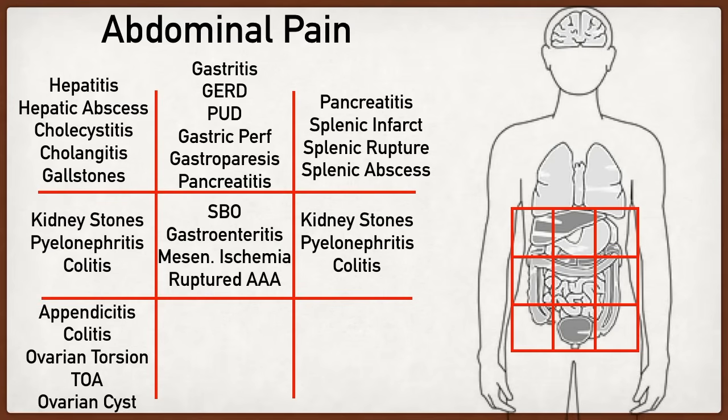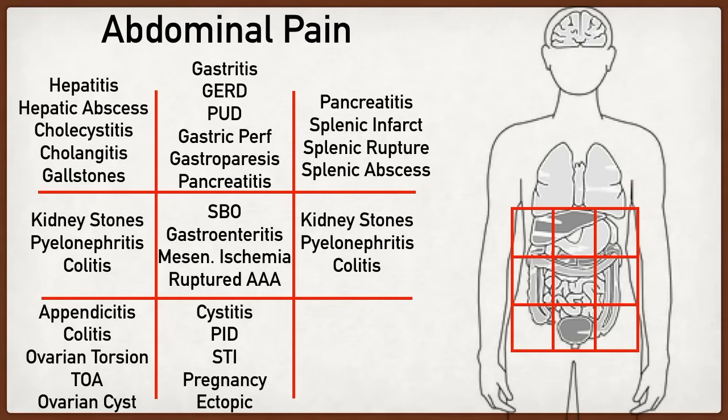Moving over to the suprapubic region, the bladder is located here, so a urinary tract infection (cystitis) can lead to suprapubic discomfort. The uterus is also in this region, so pregnancy can lead to suprapubic discomfort — especially ectopic pregnancy, which is a pregnancy located somewhere other than the uterus. Other etiologies include sexually transmitted infections in males or females, and pelvic inflammatory disease, which is a female complication of an STI.